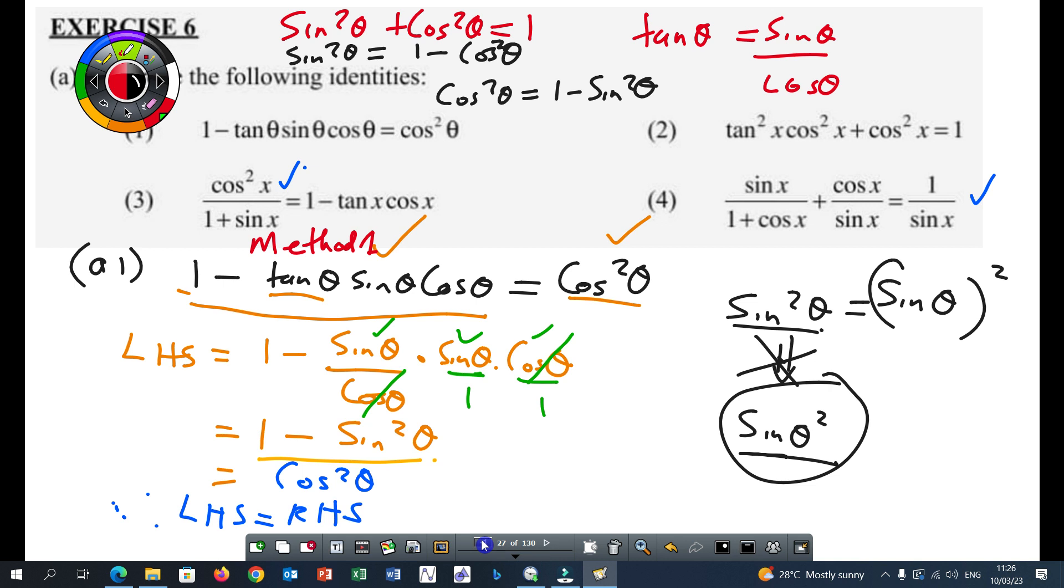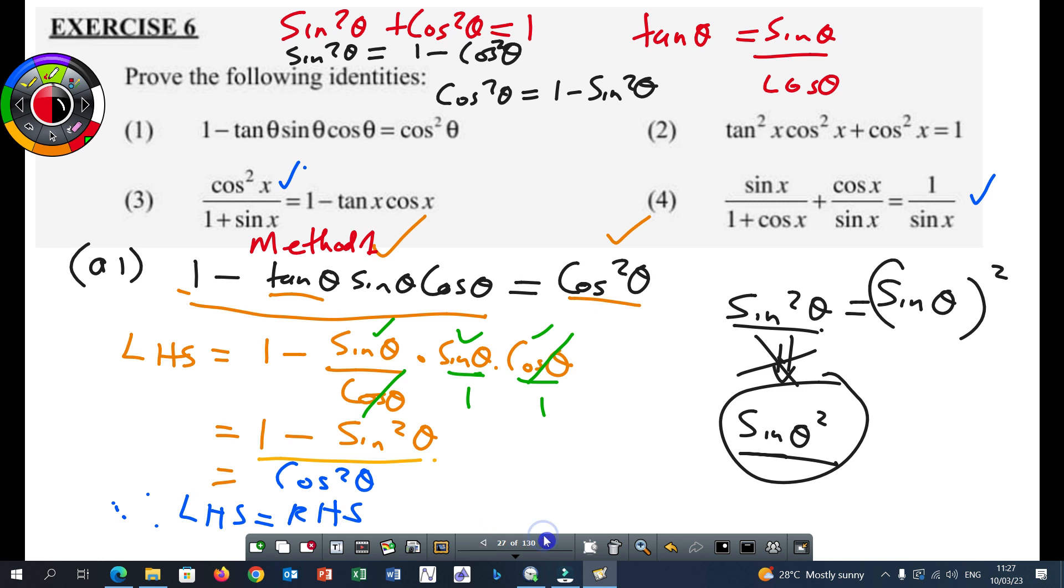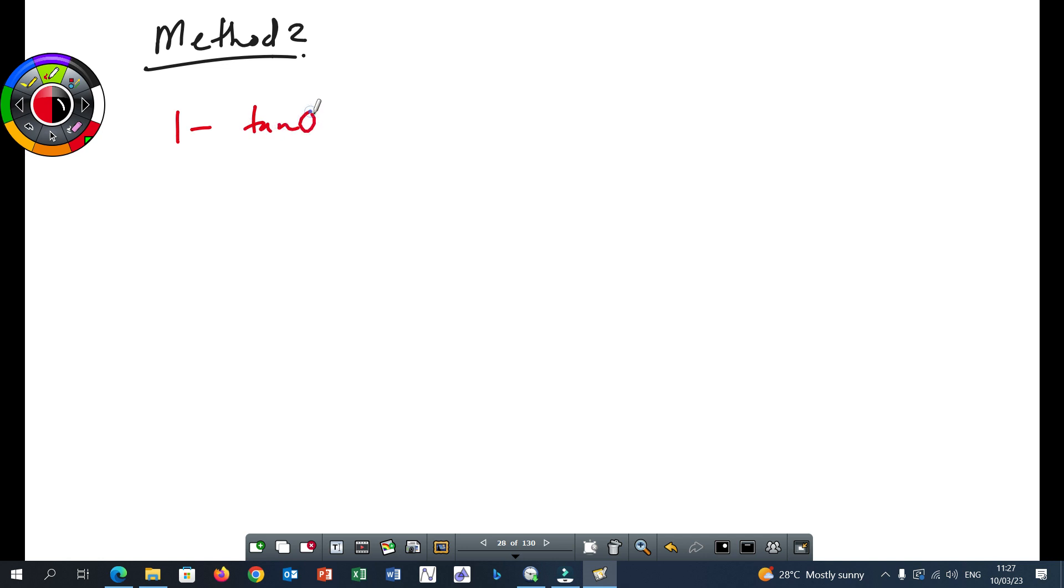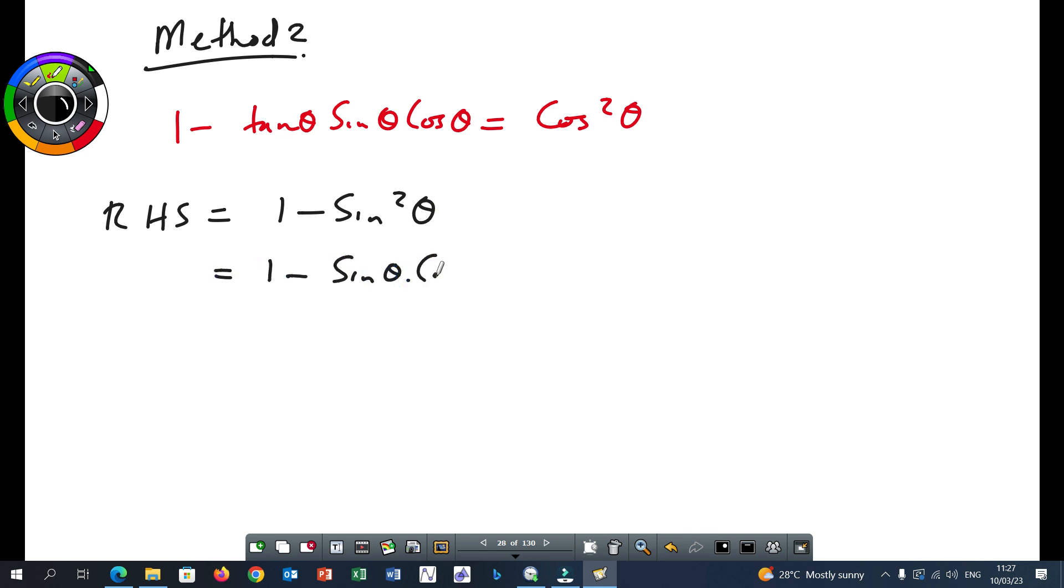Method two. All right, method two. Yes. Same question. So we have one minus tan theta times sine theta times sine theta times cos theta is equal to cos squared theta. Can I have your attention please? So I'm going to simplify from the right hand side. So my right hand side which is cos squared theta I can write it as one minus sine squared theta. And this is the same as one minus sine theta times sine theta.